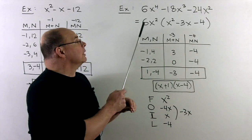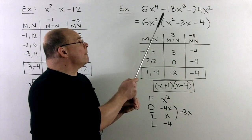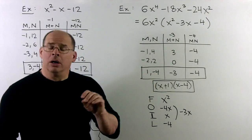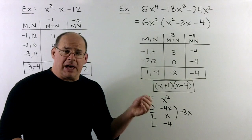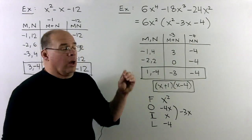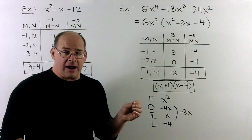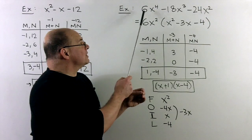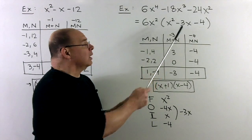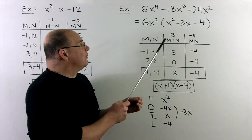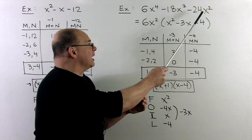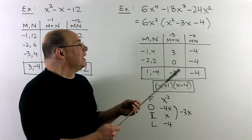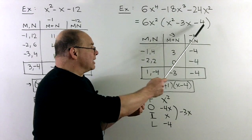Let's try 6x to the fourth minus 18x cubed minus 24x squared. This isn't in the x squared plus bx plus c pattern, but we might be able to pull out a greatest common factor — that's always your first step. Looking at the numbers 6, 18, and 24, we can pull out a 6. For the powers of x, the lowest power is x squared, so we factor that out too. That leaves us with x squared minus 3x minus 4.